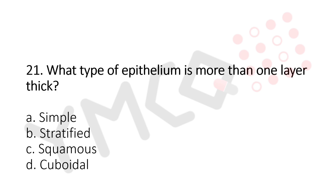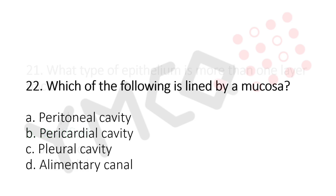Question 21: What type of epithelium is more than one layer thick? Option A: simple. Option B: stratified. Option C: squamous. Option D: cuboidal. The answer is Option B, stratified.